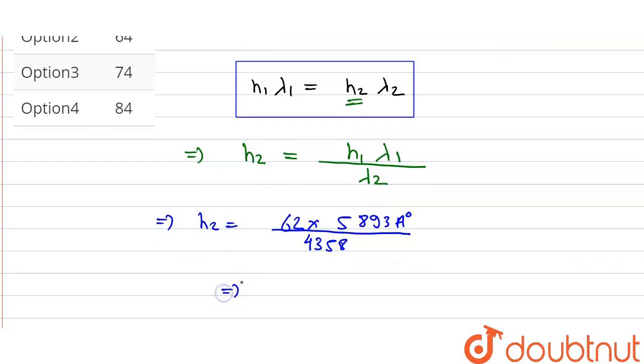Now by simplifying this, we will get finally our answer. The number of fringes N2 will be 84.